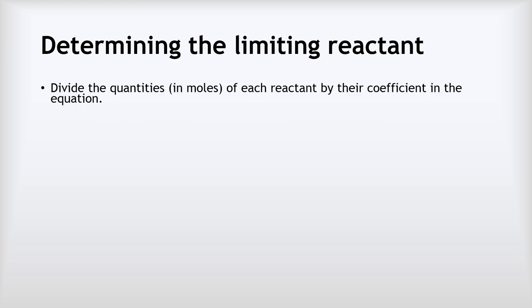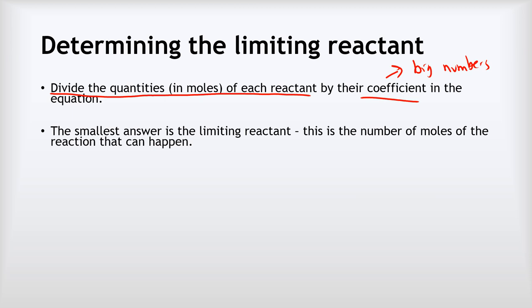So how do we determine the limiting reactant? We divide the quantities in moles of each reactant by their coefficient in the balanced chemical equation — remember the coefficient is the large number in front of each substance. The smallest answer is the limiting reactant, and what we've found in that smallest answer is the number of moles of the reaction that can actually take place.